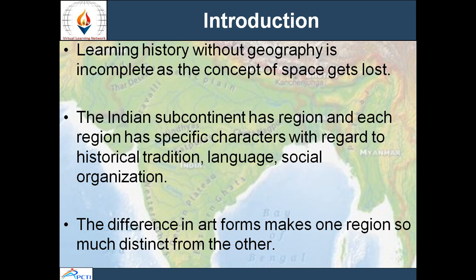The northern boundaries of India are provided by the lofty ranges of the Himalayas, which run almost in a wall-like shape from northwest to northeast. India has the great plains of northern India formed by the basins of three mighty rivers: the Indus, the Ganges, and the Brahmaputra. Below that, India has the Deccan Plateau of Peninsular India, which is a geologically very old structure of the Indian subcontinent.